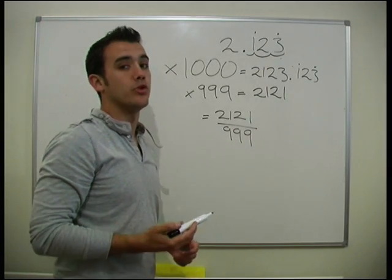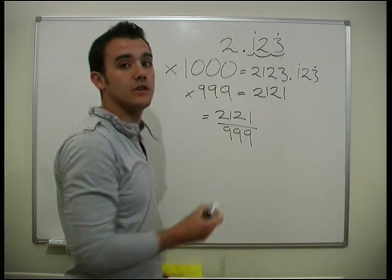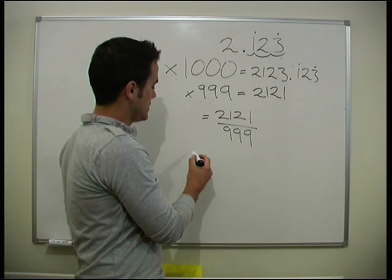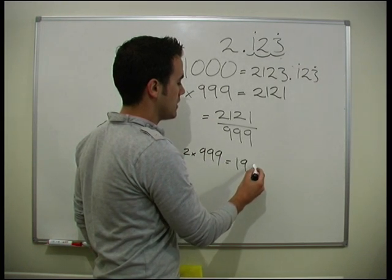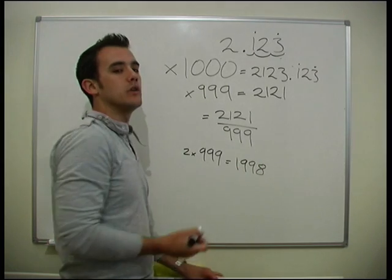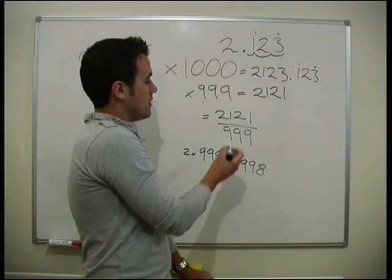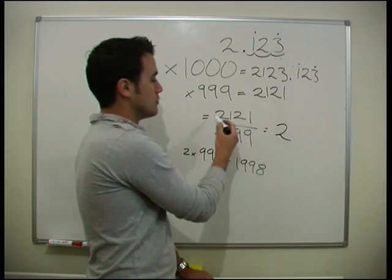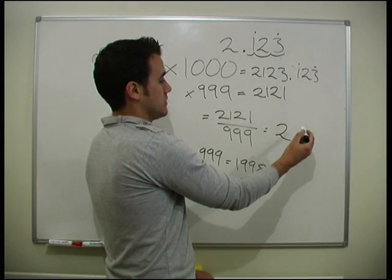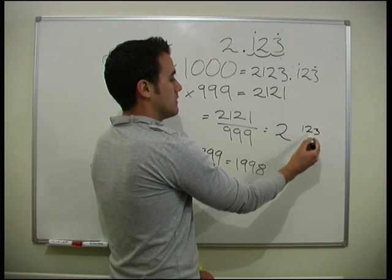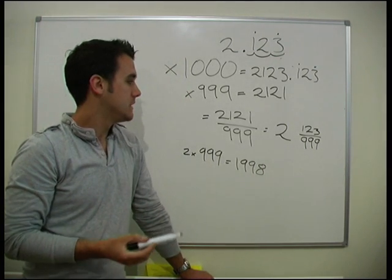Now obviously this is an improper fraction — there's a bigger number on top than the bottom. So how many times does 999 go into 2121? Well, 2 times 999 gives us 1998. It's not going to go any more times than that. So what's our remainder? We know it's 2 and something. How do we get from 1998 to 2121? It's going to be 123. So it's going to be 2 and 123 over 999. And it's that simple.